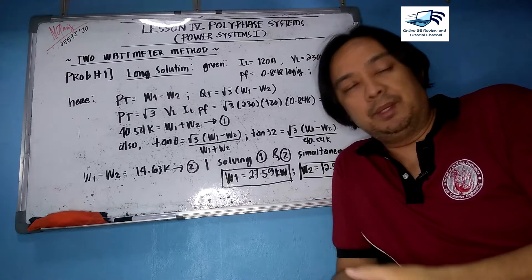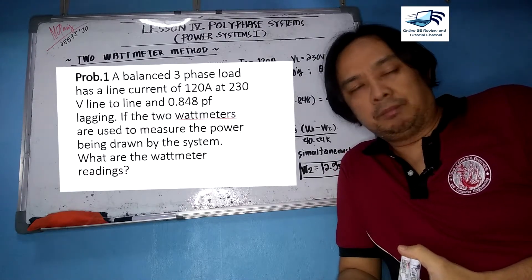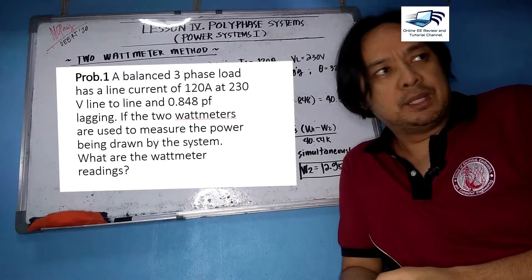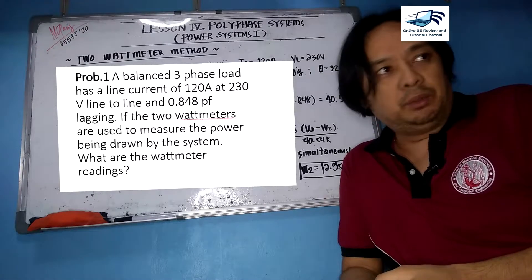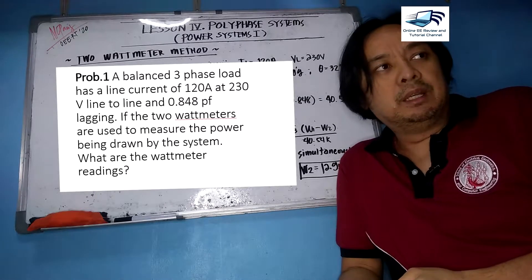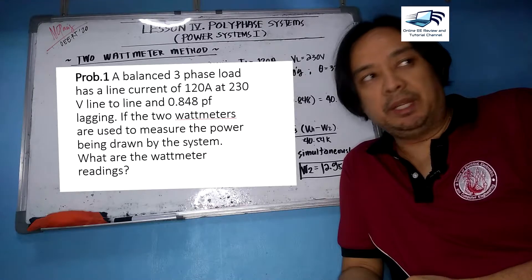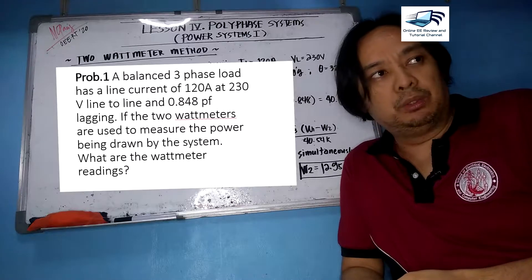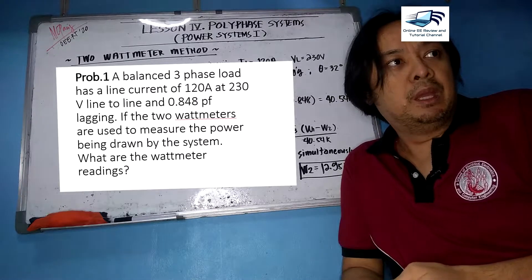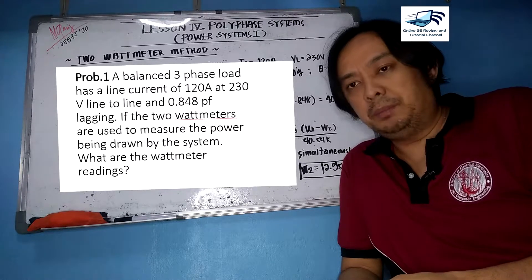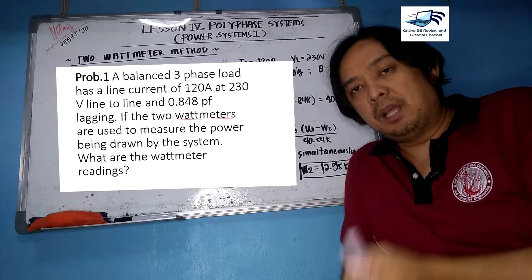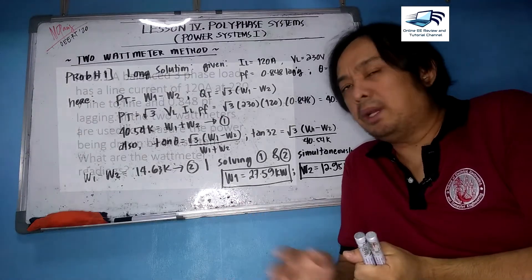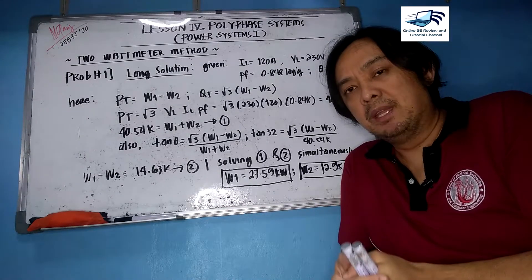Let us solve problem number one. A balanced three-phase load has a line current of 120 amperes at a 230-volt line-to-line voltage and a power factor of 0.848 lagging. If two wattmeters are used to measure the power drawn by this system, what are the wattmeter readings W1 and W2 respectively? We have two solutions for this problem.